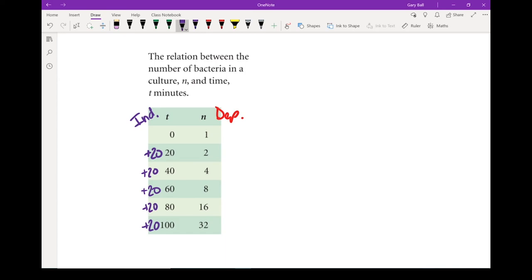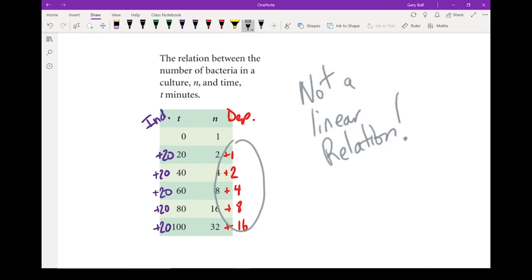Now that's not enough yet to tell me if I have a linear relation. The y value, my dependent variable also has to go up at a constant rate. So from 1 to 2, it went up 1. From 2 to 4, now it went up 2. From 4 to 8, now it's going up 4. From 8 to 16, it now went up 8. From 16 to 32, it went up 16. Because those are not changing at the same amount every time, we do not have a constant rate of change. In fact, if you look at the numbers, it's doubling each time. It's not going up by the same amount, it's going up by a different amount every time. This one is not a linear relation.